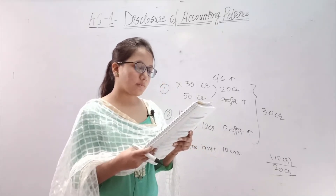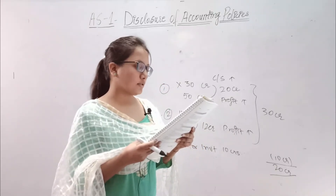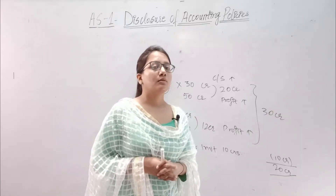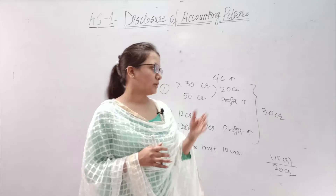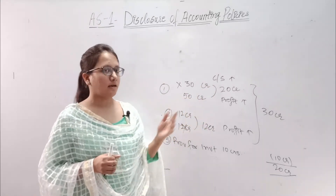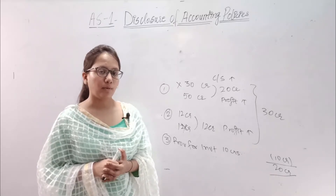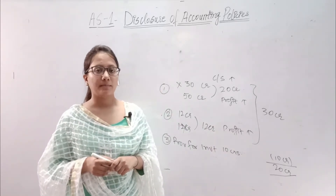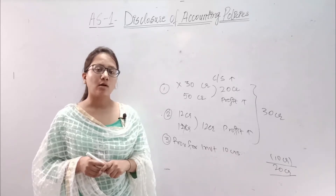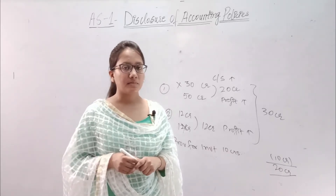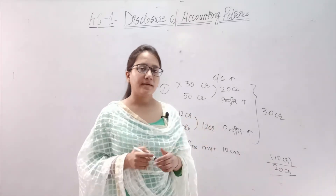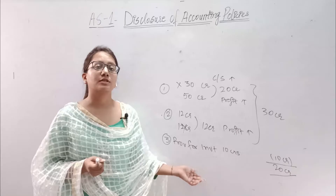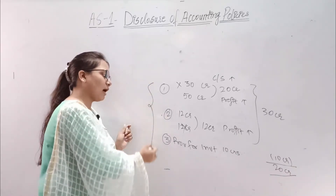As chief accountant of the company, you are asked by the managing director to draft the notes on accounts for inclusion in the annual report for 2013-14. The first point involves changing the valuation of closing stock — that is, the inventory's method of valuation. You were doing it on prime cost, now on work cost. So what will this be? A change in accounting policy. The second point: we decided to make a 2% provision, now we will not make it. Whether to make provision or not — this is an accounting policy. But how and which method — this is not an accounting policy. And last, we had not made provision for investment before, and now we will make a 10 crore provision. So since these are three accounting policy changes, we need three disclosures.